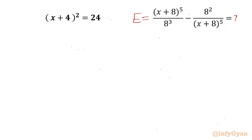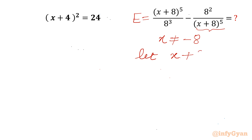We begin by noting x cannot be equal to minus 8, since the denominator cannot be equal to 0. Now let us assume x plus 8 equal to a. So a cannot be 0, as x cannot be minus 8.